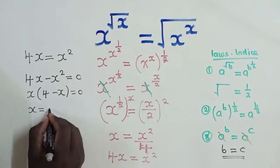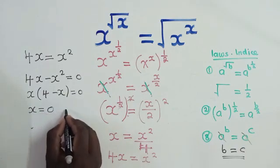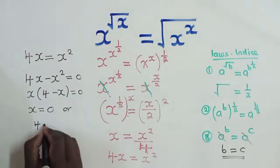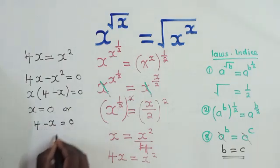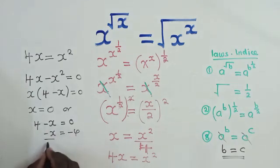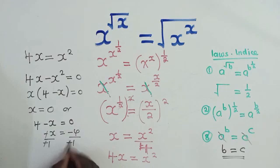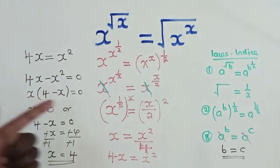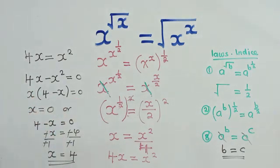So the solutions for X is equal to 0 or 4. This 4 minus X is equal to 0, we solve for X. We divide by negative 1, negative 1, our X will be equal to 4. So I guess you know how to solve quadratic equations from this stage. We just equate this equal to 0 and this equal to 0.